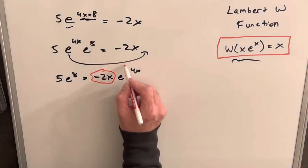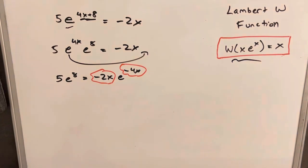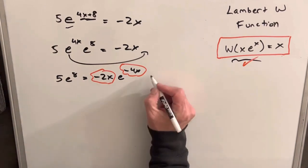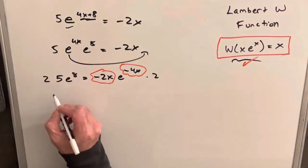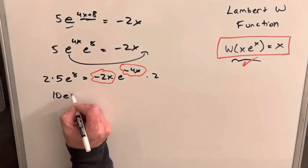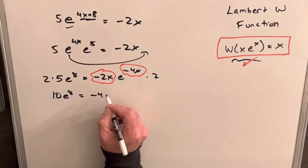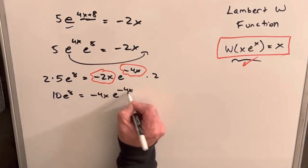Then we're really close to having what we want. We just need to make these exponents match exactly in order to use our tool here. So we'll multiply both sides by 2. We're going to have 10 e to the 8 equals minus 4x e to the minus 4x.